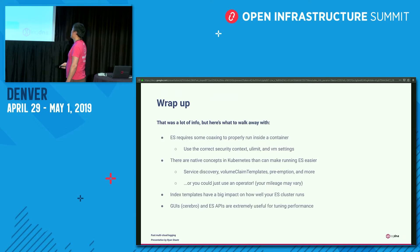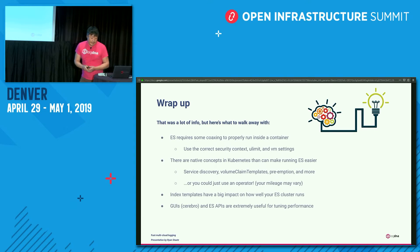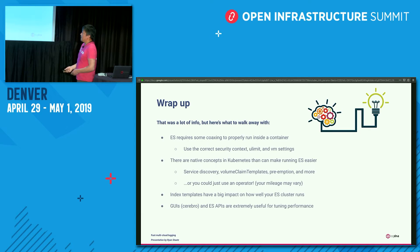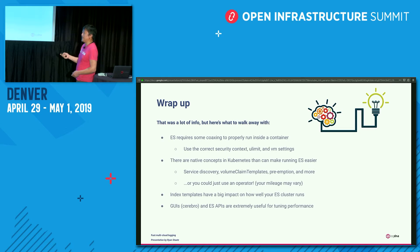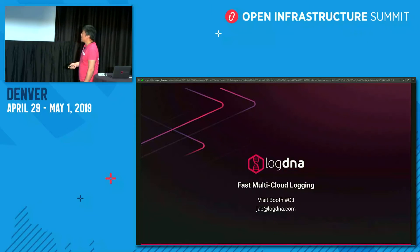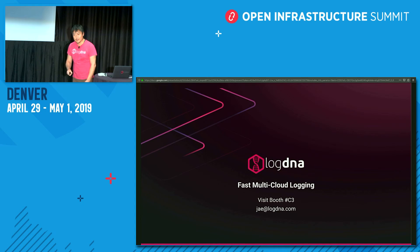To wrap up: Elasticsearch has a ton of good potential, but it requires you to read the documentation — even the really esoteric stuff — and get the proper security, ulimits, and VM settings in place. VM settings are massively important. Put the proper pieces in place with respect to service discovery, sticky volumes, and preemption. Index templates are huge. And then you've got to manage that on the back end and choose the right tool to do that. Come visit us in C3 if you'd like to talk more about Elasticsearch, logging, or anything else. We're here all day — enjoy your lunch.